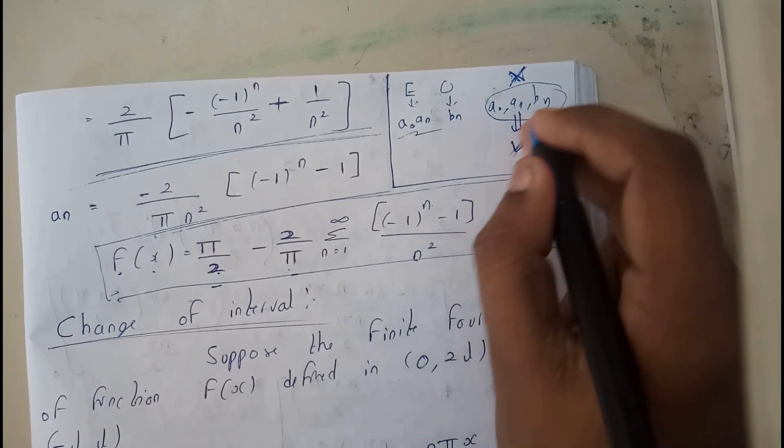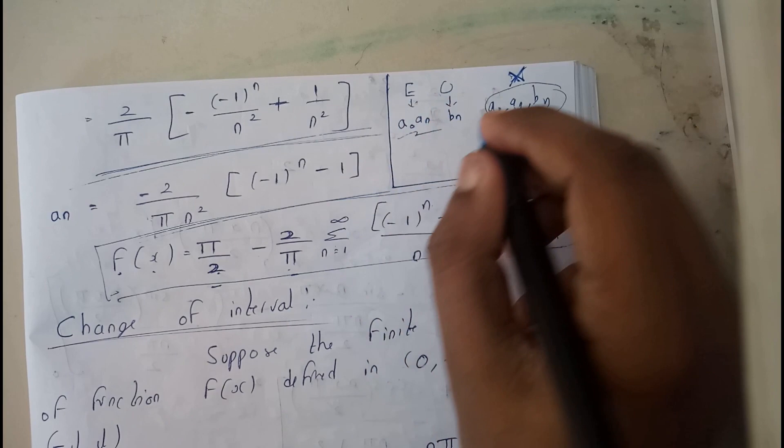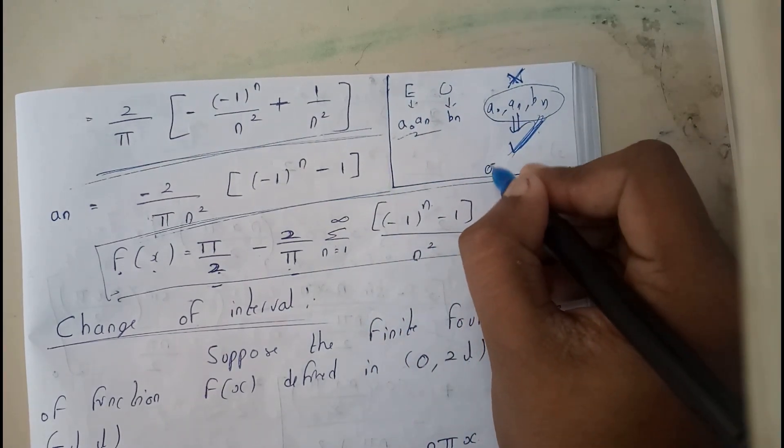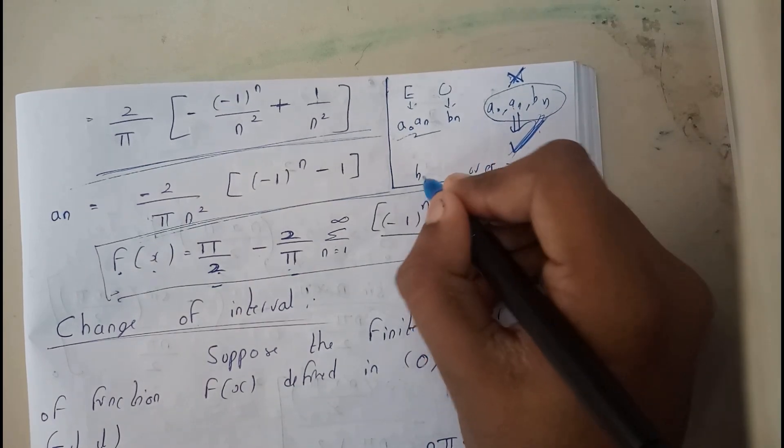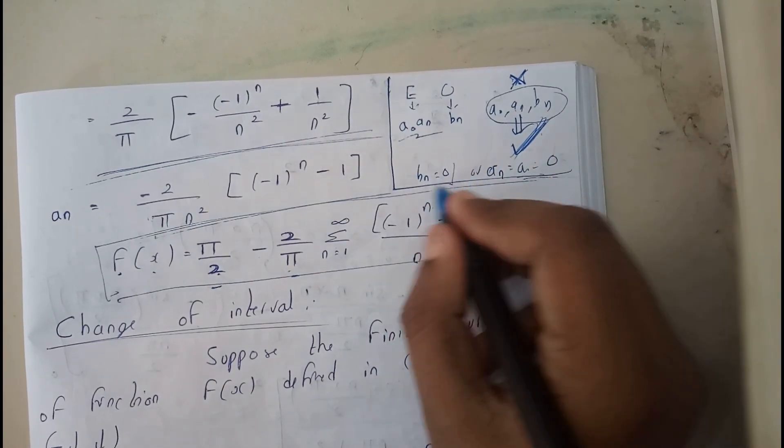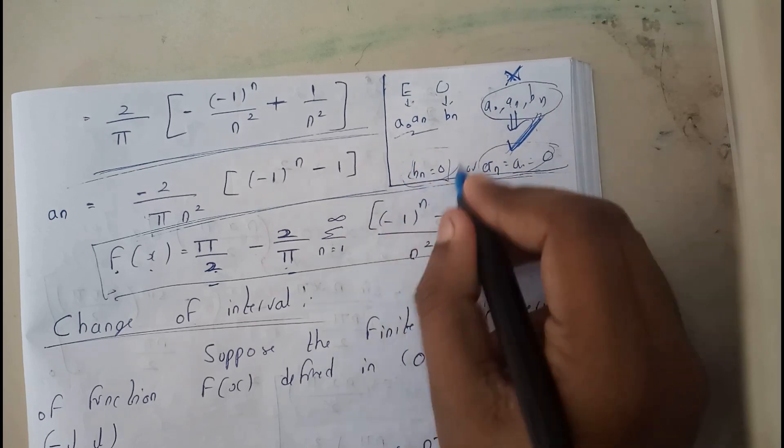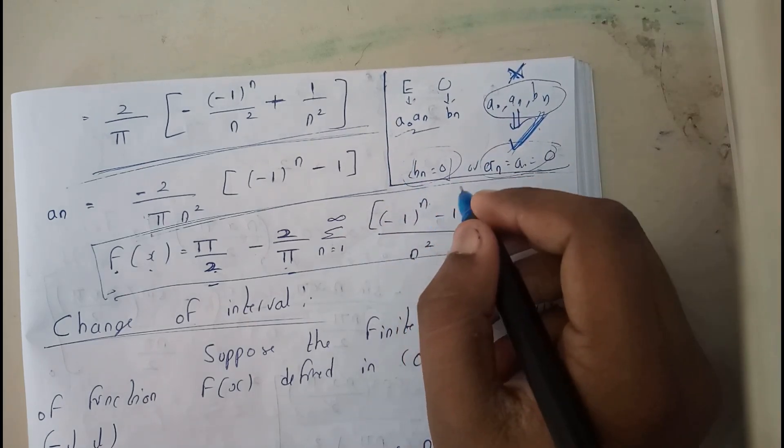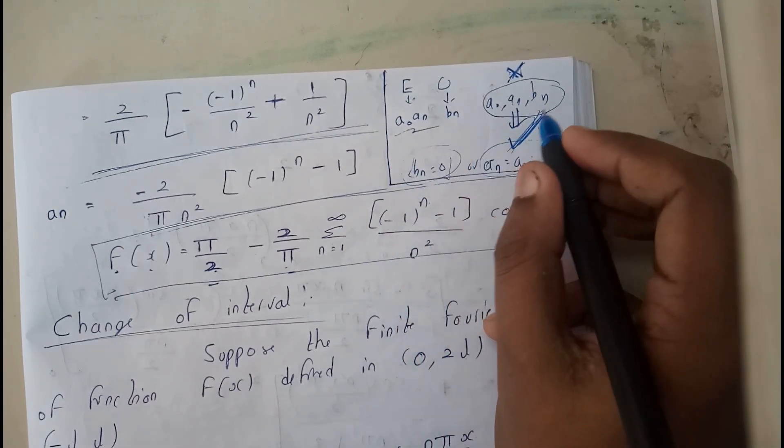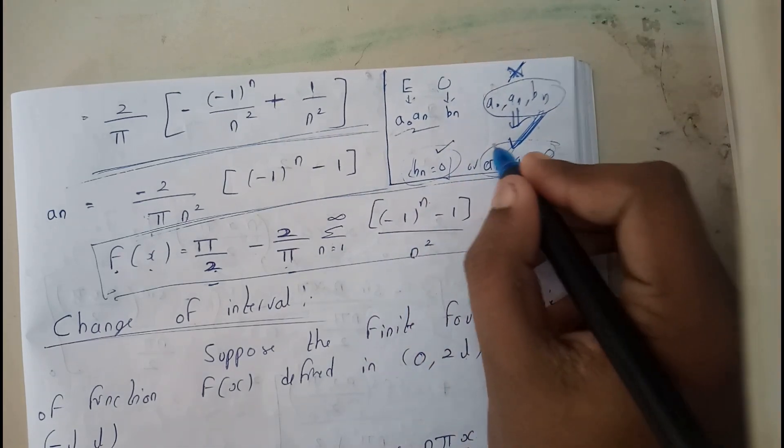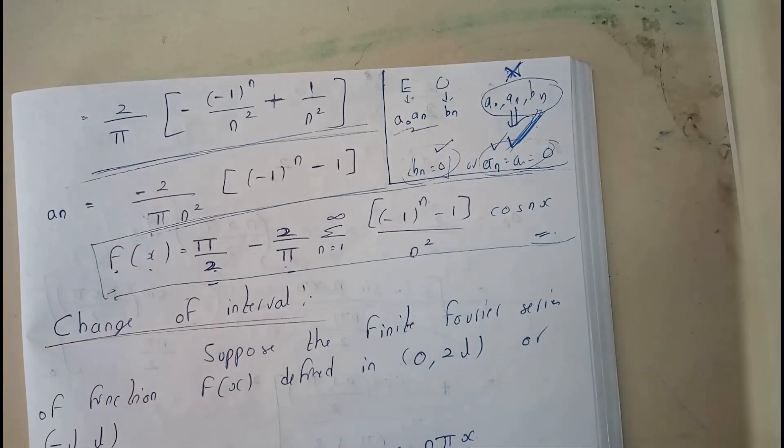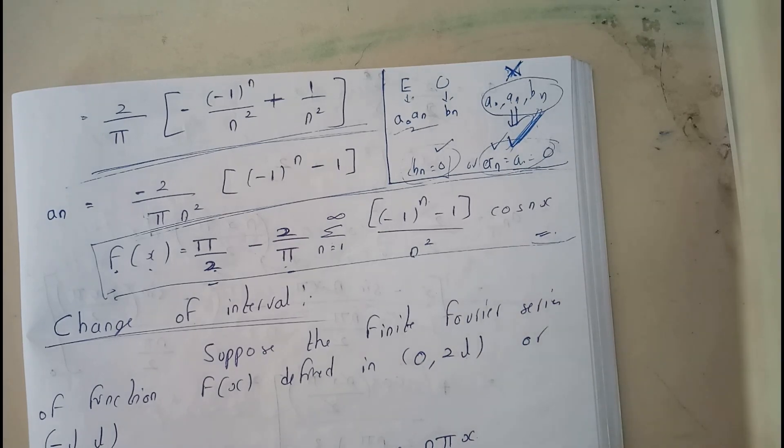If you apply this formula for an even function or an odd function, you are going to get aₙ = a₀ = 0 or bₙ = 0. So any one of these conditions should be true in your result. From that you can say that if bₙ = 0 it is an even function, if aₙ and a₀ = 0 it is an odd function, like that you can justify.